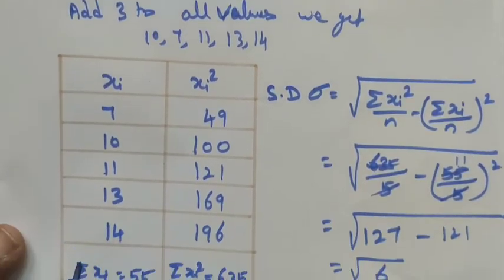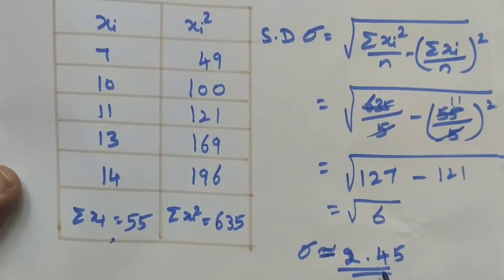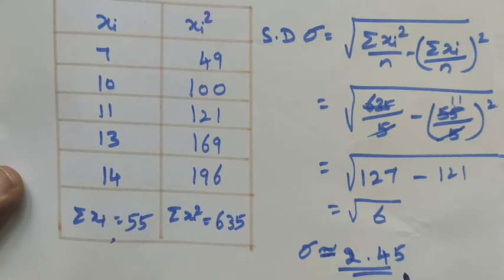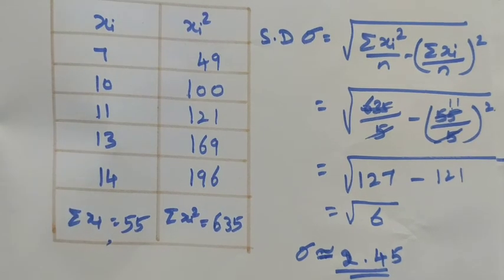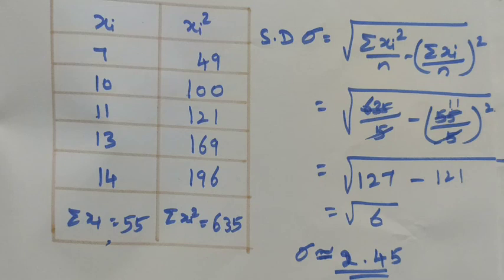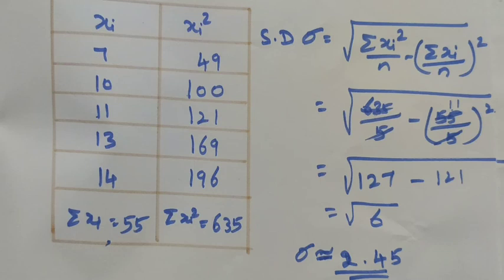See here: when we use the actual data we get 2.45, and if we add the same constant number to all the data we still get the same standard deviation without any change. From this we conclude: if you add any constant value to each data point, the standard deviation remains the same. If you add a fixed constant to all values in a given data set, the standard deviation does not change. Thank you students.